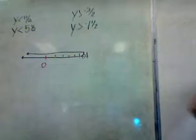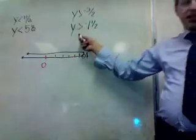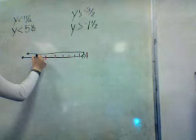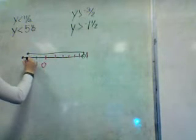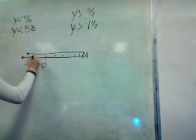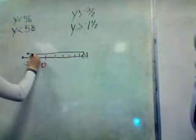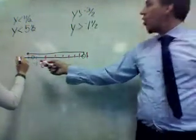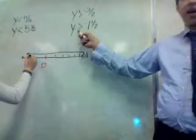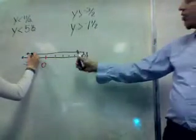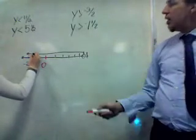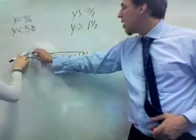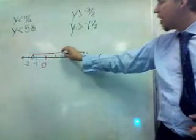You've also got y is greater than negative 1 and a half. You plot negative 1 and a half — in between negative 1 and negative 2 — and it's an open circle because there's no line under the inequality sign. It goes to the right. And you see they overlap, and they actually keep on overlapping.